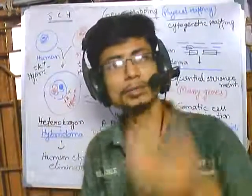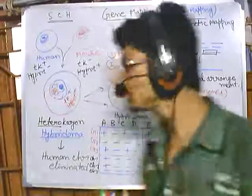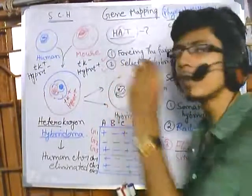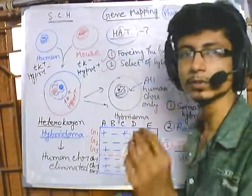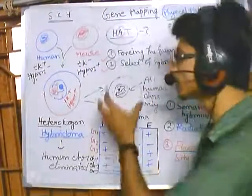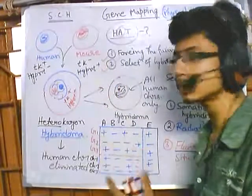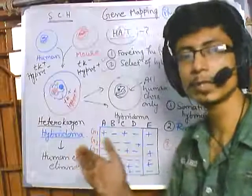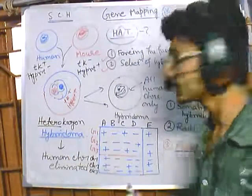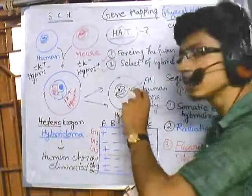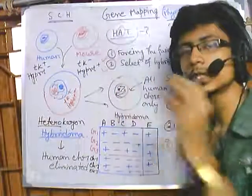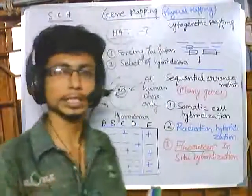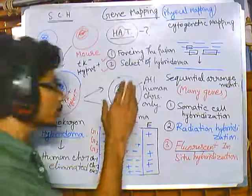There is a basic tendency of losing human chromosomes — elimination of human chromosomes from the system. But mouse chromosomes can also be eliminated. This elimination can lead to the generation of hybridomas consisting of only human chromosomes with not a single mouse chromosome. A few such cells will be generated, and those cells are then cultured for a few generations to produce a cell line.